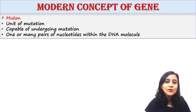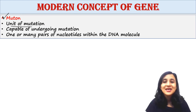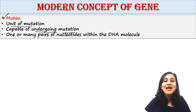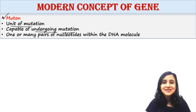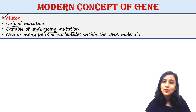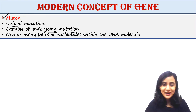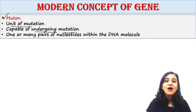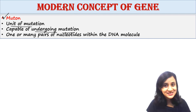Next is muton. Gene is also called muton or unit of mutation, as it is capable of undergoing mutation. At the molecular level, a muton consists of one or many pairs of nucleotides within the DNA molecule, because mutation can occur in one nucleotide or in many nucleotides. We know the concept of point mutation, where only one nucleotide is mutated.